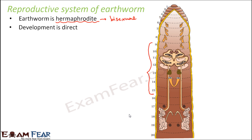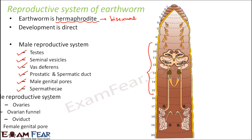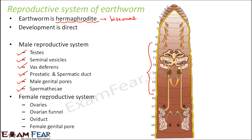The male reproductive system consists of the following important organs: testis, seminal vesicles, vas deferens, prostatic and spermatic ducts, male genital pores, and spermathecae. Many of these terms are already known from the reproductive system of human beings. The female reproductive system consists of ovaries, ovarian funnel, oviduct, and female genital pore.